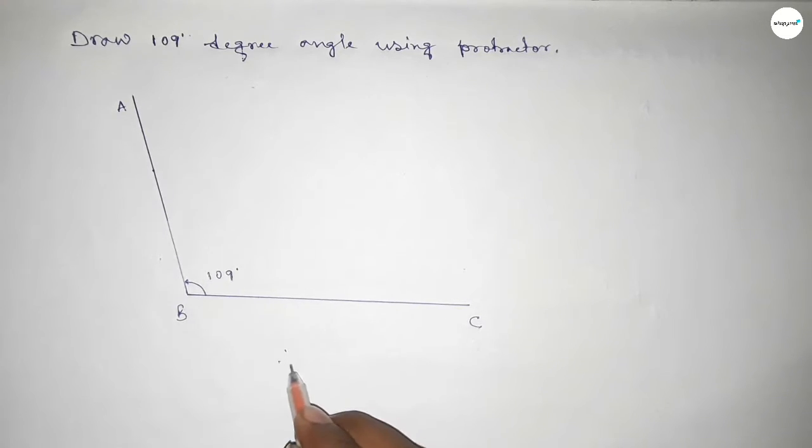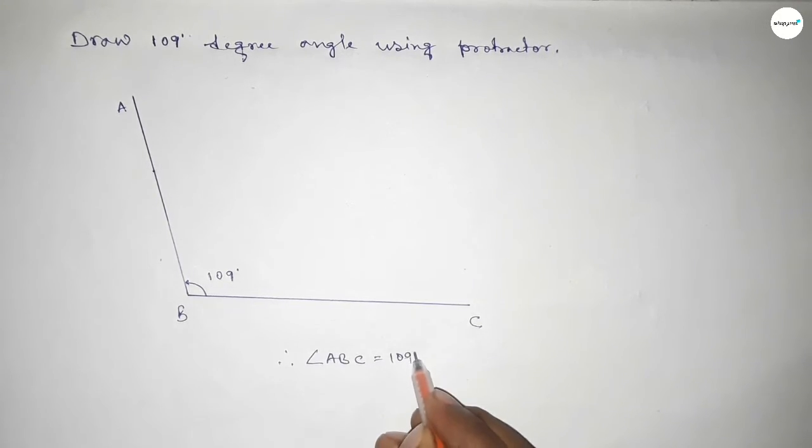Therefore, angle ABC equals 109 degrees. That's all, thanks for watching.